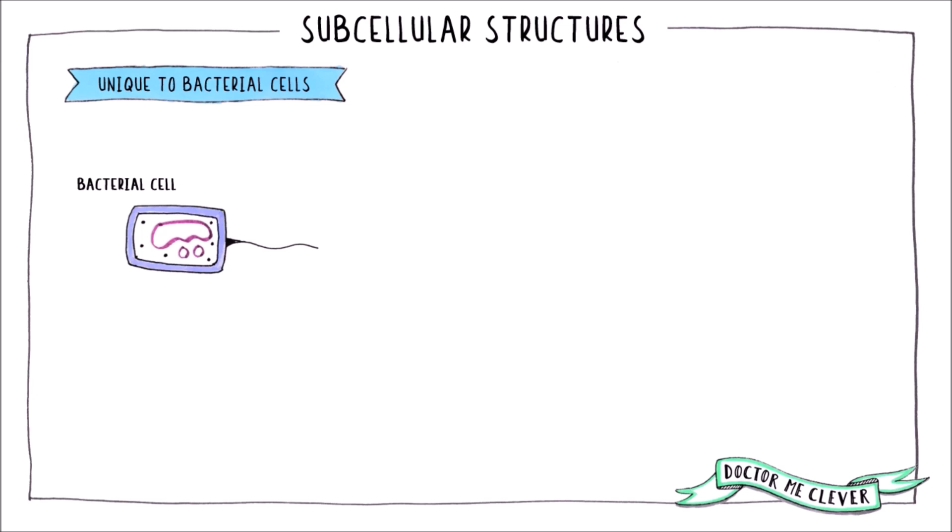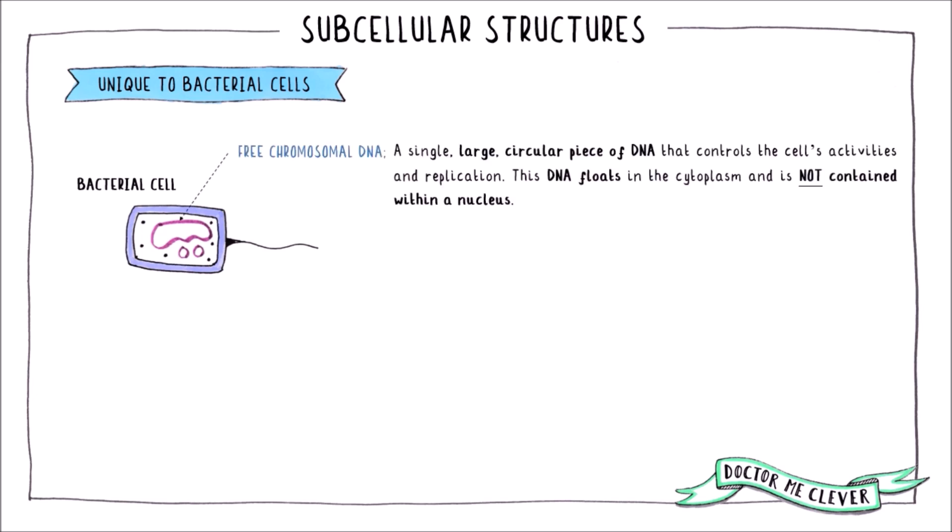There are four subcellular structures unique to bacterial cells. Bacterial cells have chromosomal DNA, but it is not contained within a nucleus — it is free to flow in the nuclear region of the cytoplasm.